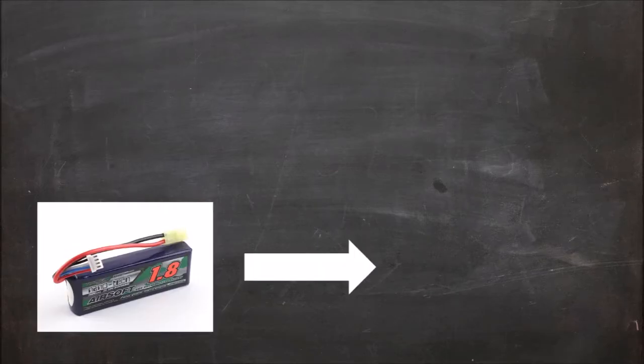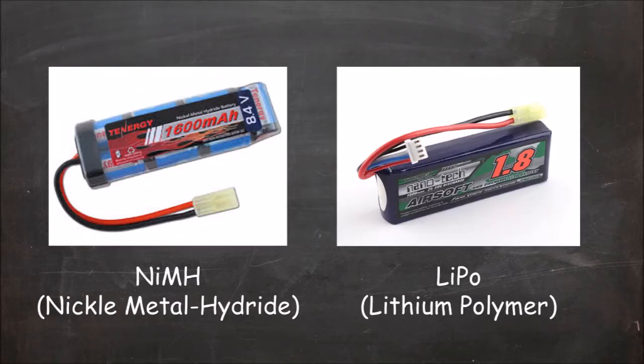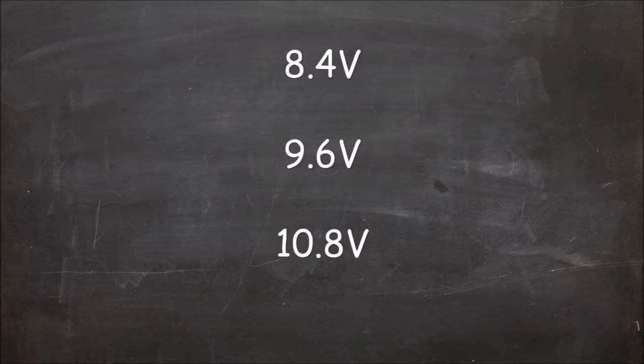So for AEGs, the gun needs a power source to run the motor. There are several types of batteries based on what the cells are made from. The two most prevalent are the NiMH and LiPo. NiMH stands for nickel metal hydride. These batteries have both voltage and mAh, or milliamperage. These batteries have voltages of 8.4 volts, 9.6 volts, and 10.8 volts.